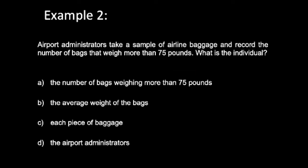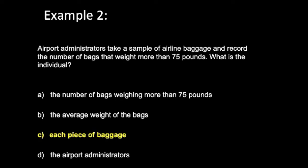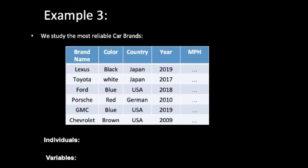Example 2: Airport administrators take a sample of airline baggage and record the number of bags that weigh more than 75 pounds. The individual is each piece of baggage. Another example: we study the most reliable car brands, so the individual is the brand name and the variables are color, country, year, and MPH.